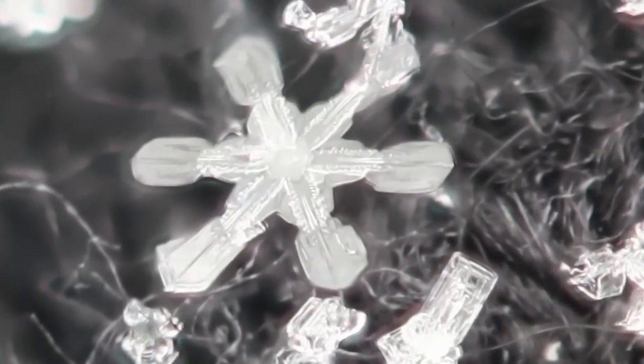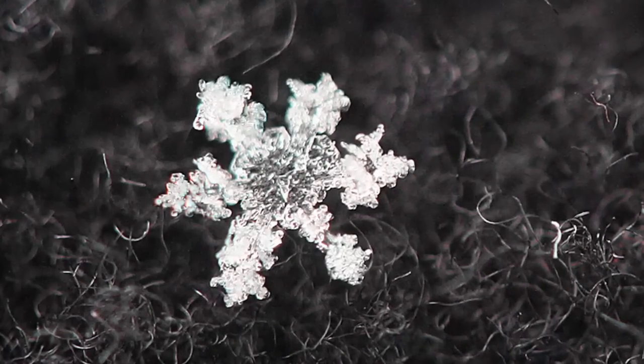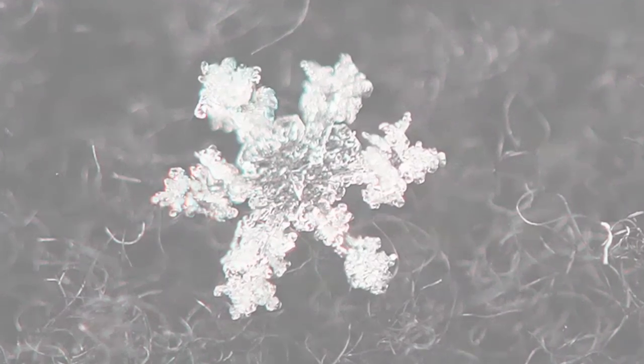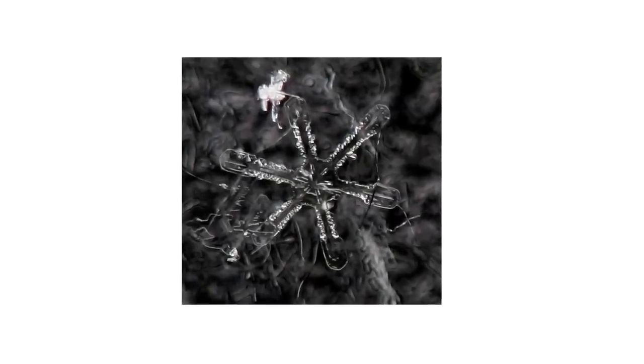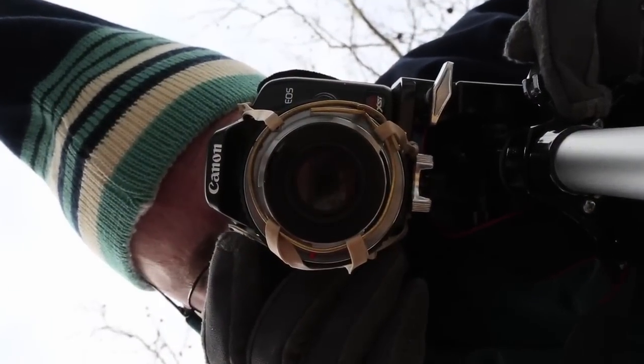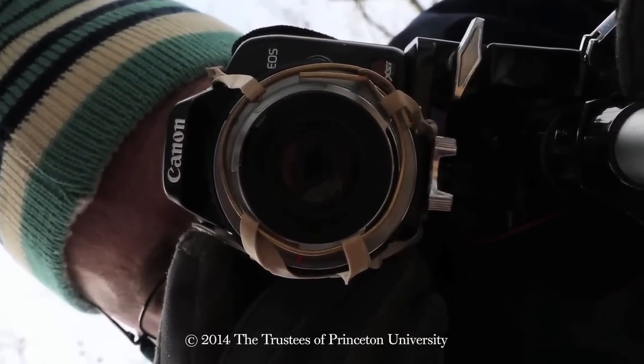The coolest thing about snowflakes and the reason I like to photograph them is the symmetry — the six-fold symmetry — which physicists understand as having to do with water, the shape of the molecules, and how ice crystals form. That six-fold symmetry is well understood at some level, but as a snowflake grows it becomes so intricate, and everyone's different. The physics behind how they grow is certainly not well understood by me, and I find that really fascinating and would like to understand it better.